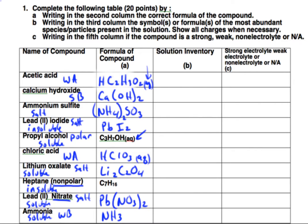Now let's do the solution inventory. Since acetic acid is a weak acid, it just stays mostly as molecules. So we're going to leave it just like that. Since it's a weak acid, it's going to be a weak electrolyte.